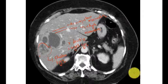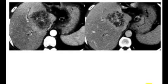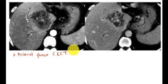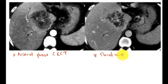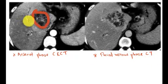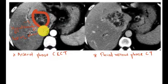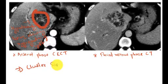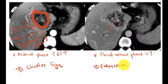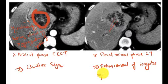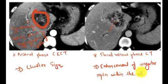The second sign is the cluster sign, which is the aggregation of multiple low attenuation liver lesions in a localized area to form a single lesion. In the CT scan, the first image is the arterial phase and the second is the portal venous phase. You can see the hypodense cystic cavities showing aggregation — this is known as the cluster sign. In the portal venous phase, we can see enhancement of irregular septa within the abscess cavity.